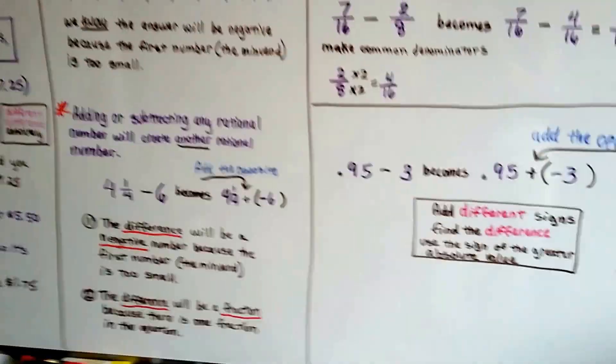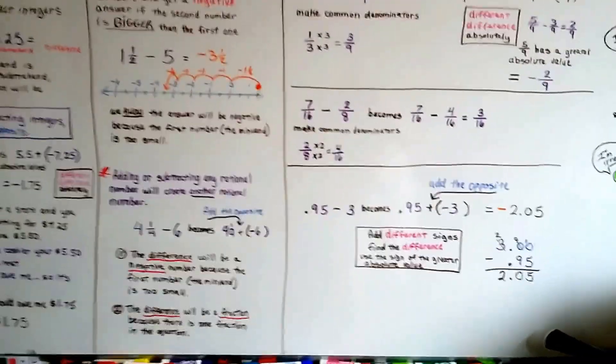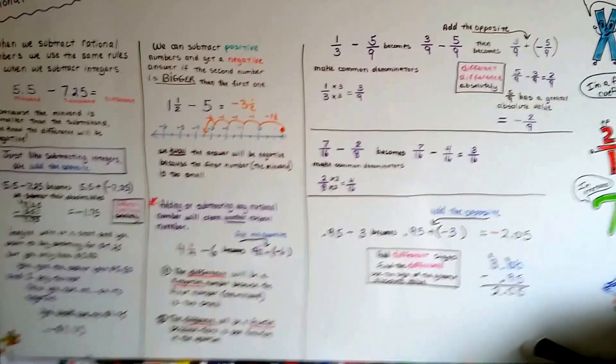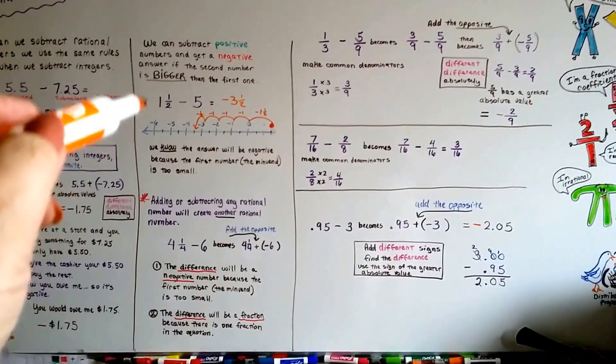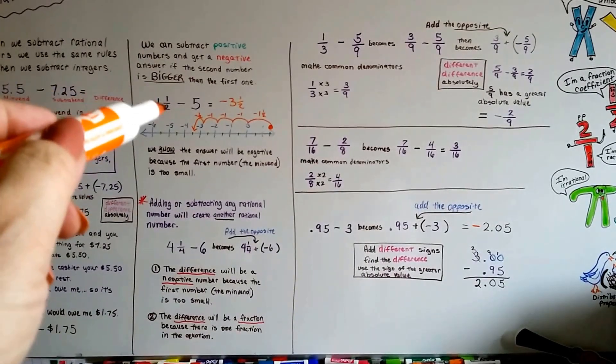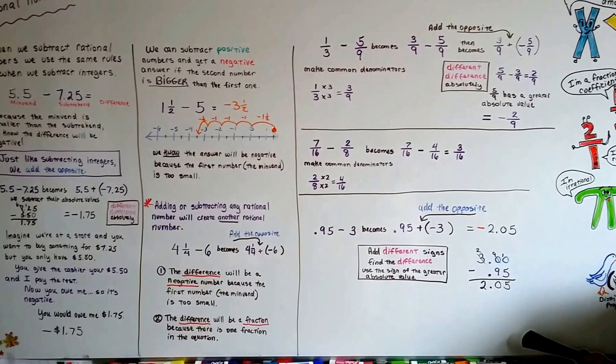So just remember that it's no different than subtracting integers. We're going to add the opposite. And remember, if the first numeral here, integer, whatever, the first rational number is smaller than the subtrahend, it's going to go into the negatives.